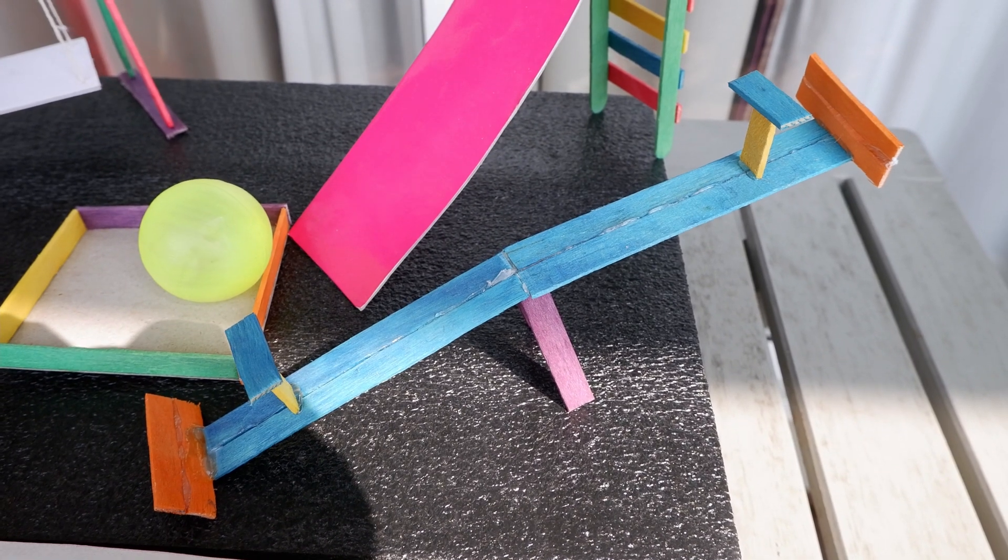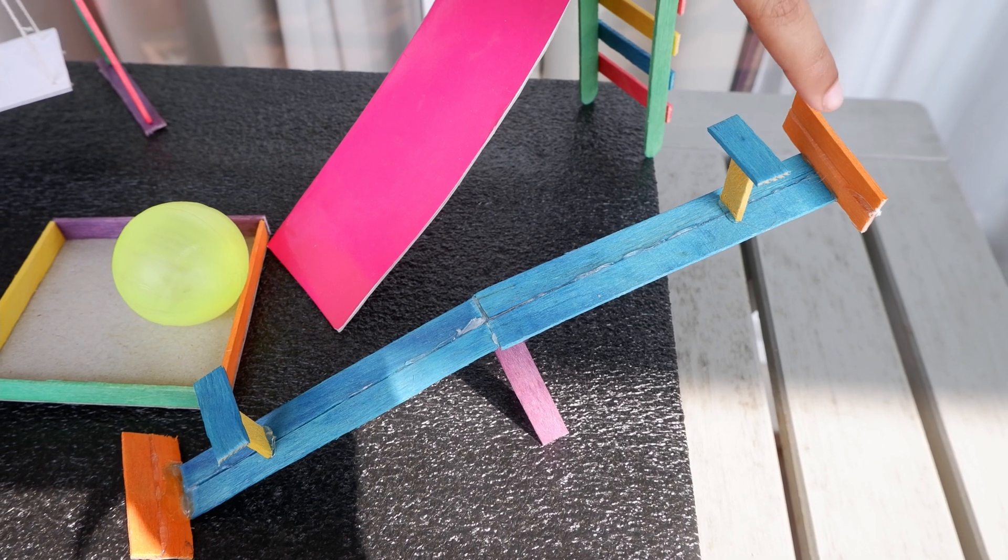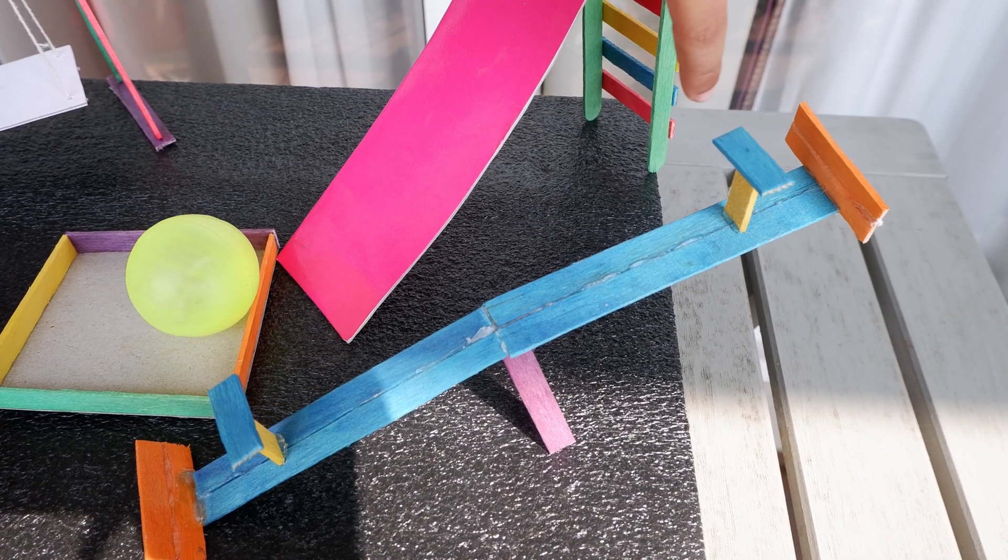Look at the seesaw. The back support of the seesaw is shaped like a rectangle. Two of the sides are even. And the other two sides are also even.